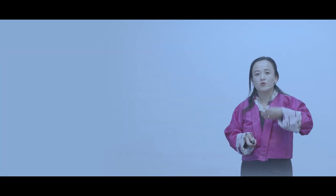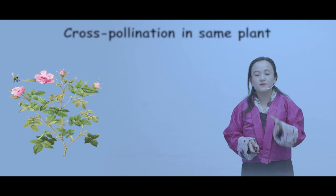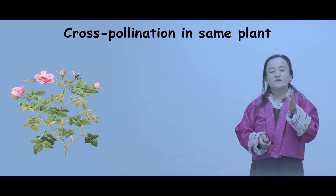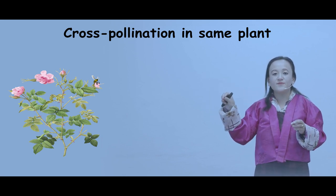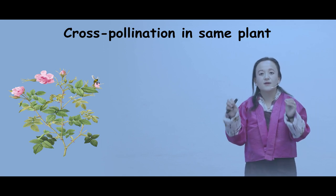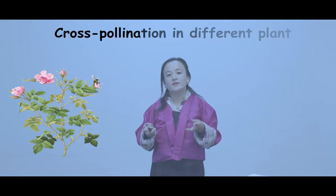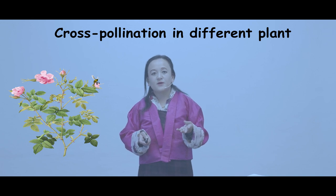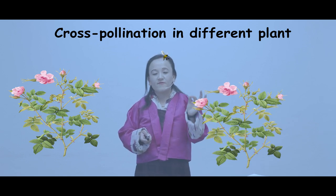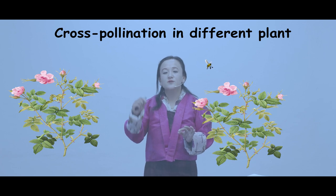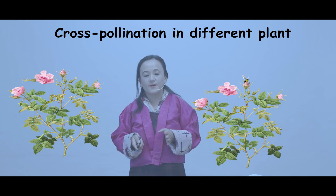In cross-pollination within the same plant, the agent bee takes pollen grains from the anther of one flower to the stigma of another flower of the same plant. In cross-pollination between different plants, the bee takes pollen grains from the anther of one flower to the stigma of another flower of the same species, and the flower gets pollinated.